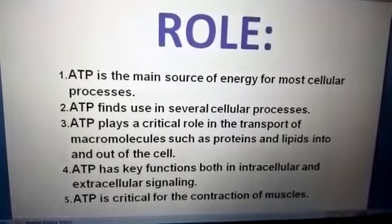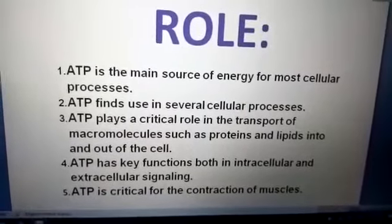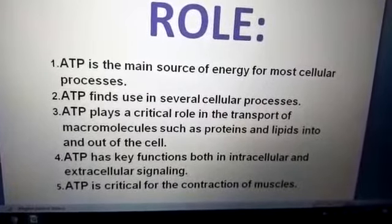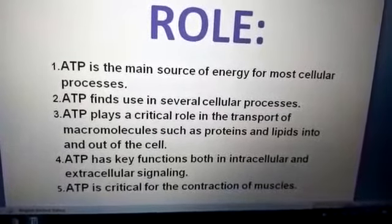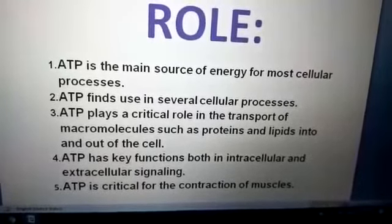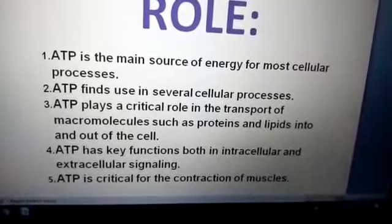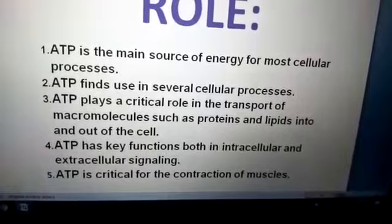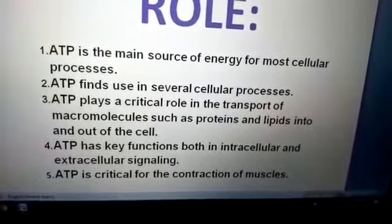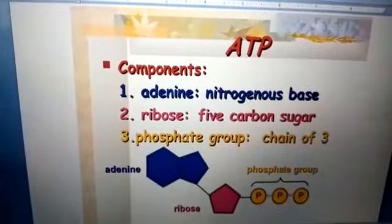Let's look particularly at the role of ATP. ATP is the main source of energy for most cellular processes. ATP plays a critical role in the transport of macromolecules such as proteins and lipids into and out of the cell. ATP has key functions both in intracellular and extracellular signaling. ATP is also critical for the contraction of muscles.